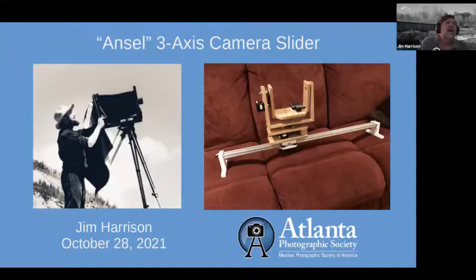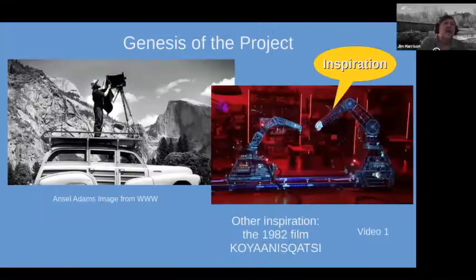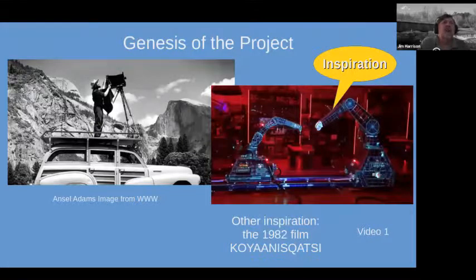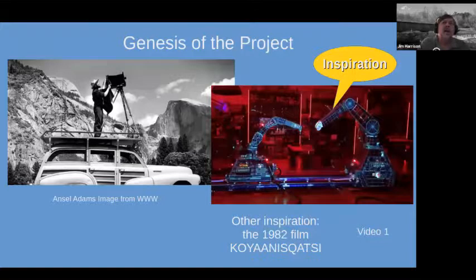Little did we know that Ansel Adams actually used a camera slider. It was a really big model — he could put his 8x10 camera on there. I don't know if you'd call it three-axis, but it certainly moved on two axes in a plane. That's part of the inspiration.